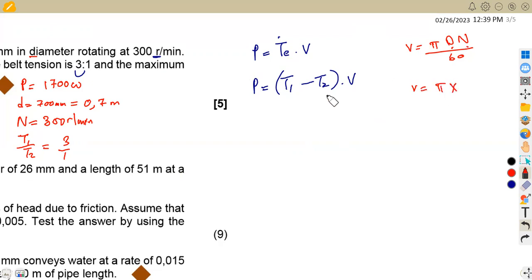So V can be pi times the diameter, which is 0.7 times N in the revs per minute, which is 300, over 60 in this case. So we can have our V in meters per second. So if you are to simplify properly, you are going to obtain 10.996 meters per second. So we have the velocity here. Now, we have power and we have V.